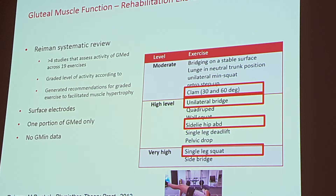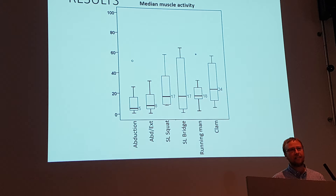The clam, single leg squat, and isometric exercises have been proposed for a range of conditions. The clam is thought to be a general gluteal exercise specifically targeting posterior glute min. But we did a study looking at a series of common rehab exercises — about five or six of them — and we weren't getting much activity in anterior glute min for exercises such as the clam, single leg squat, or bridge.